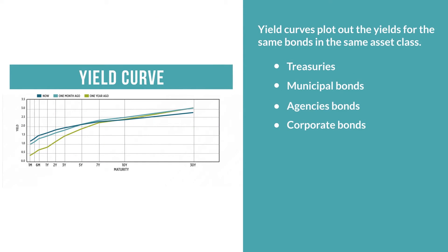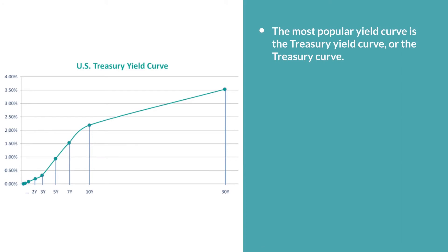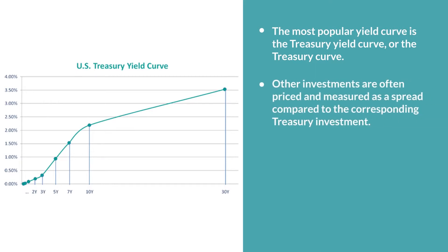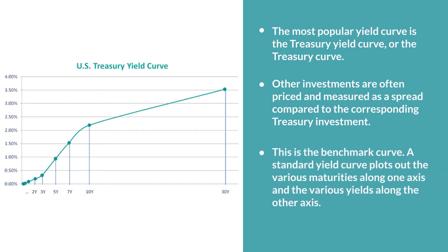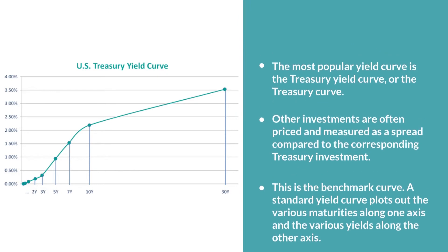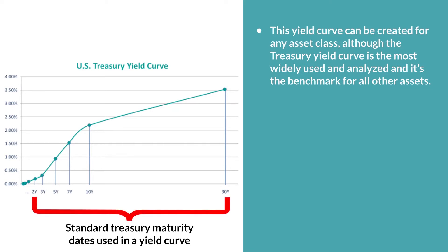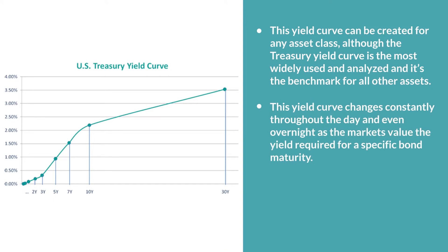The yield curve plots out the yields for the same bonds in the same asset class. The most popular yield curve is the treasury yield curve, or the treasury curve. But an investor can view other curves to see their relationship versus the treasury curve. Often, other investments are priced and measured as a spread compared to the corresponding treasury investment. This is the benchmark curve. A standard yield curve plots out the various maturities along one axis and the various yields along another axis. The yield curve changes constantly, all throughout the day and even overnight, as the markets value the yield required for a specific bond maturity. This is also known as the term structure of interest rates.